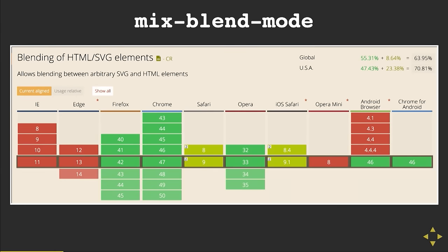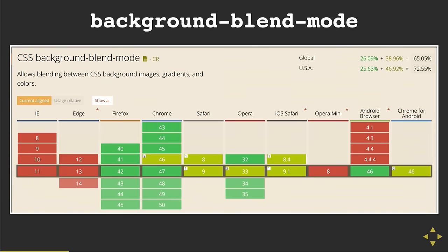There are two types of ways you can really use blend modes. There's mix blend mode — support is sort of varied — which affects how the element interacts with other elements on the page behind it. Then there's also the background blend mode, which you can use on multiple backgrounds within single elements, and this affects how those backgrounds interact with each other rather than how the element interacts with the page.